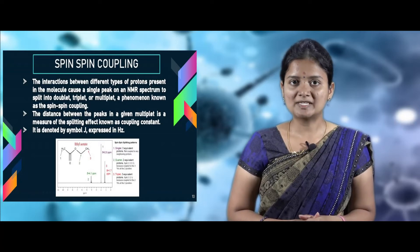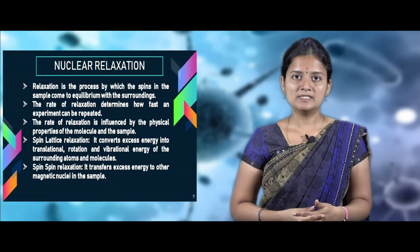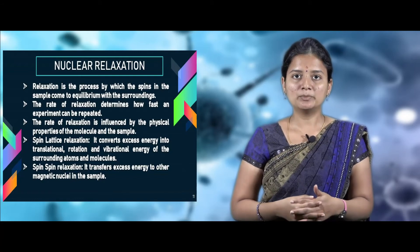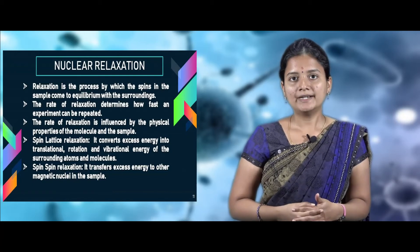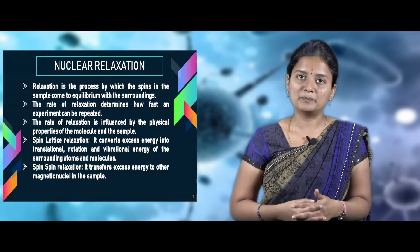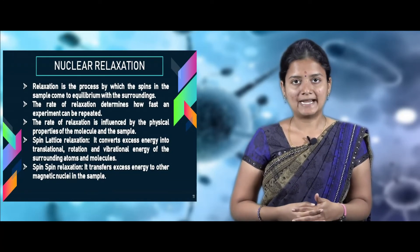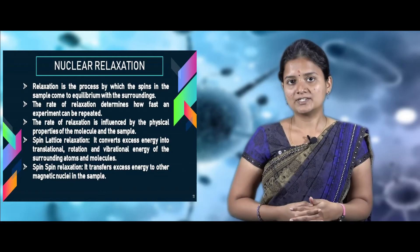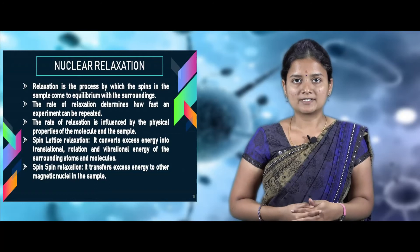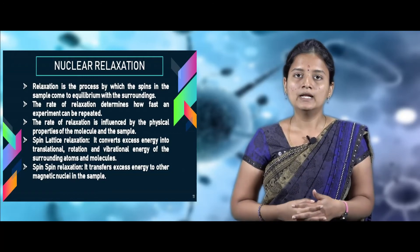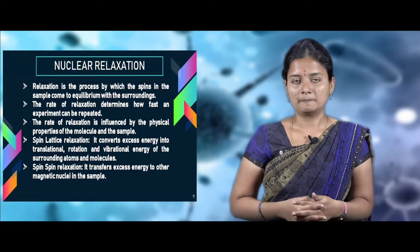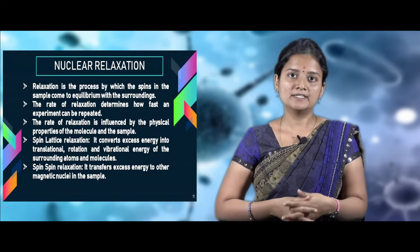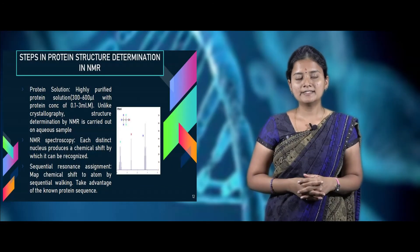The third concept is nuclear relaxation. Relaxation is the process by which the spin of the sample comes into equilibrium with its surroundings. The rate of relaxation determines how fast the experiment can be repeated and depends on the physical properties of the atoms or molecules in the sample. There are two types: spin-lattice relaxation, which converts excess energy into translational, rotational, and vibrational energy to the surroundings, and spin-spin relaxation, where excess energy is transferred to other magnetic nuclei via the surrounding environment.